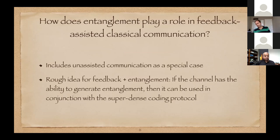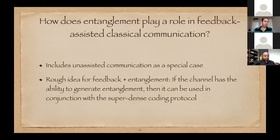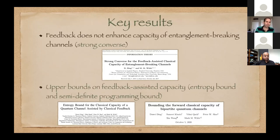How does entanglement play a role? This includes the unassisted communication scenario as a special case, but interesting things can happen in the quantum case. If the channel has some ability to generate entanglement, that entanglement can be used in conjunction with feedback for superdense coding. What's very interesting is that Shannon proved classical feedback does not enhance capacity classically. But in 2009, Graham Smith and John Smolin came up with a quantum channel for which classical feedback can dramatically enhance capacity — the unassisted capacity is no more than two bits per channel use, whereas the feedback-assisted capacity can be proportional to the logarithm of the channel dimension, potentially unbounded.